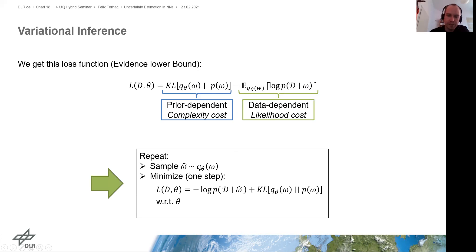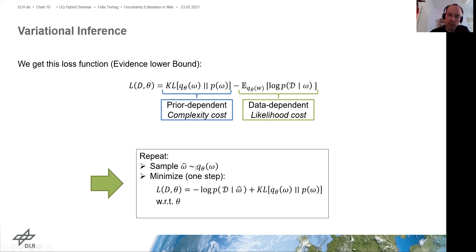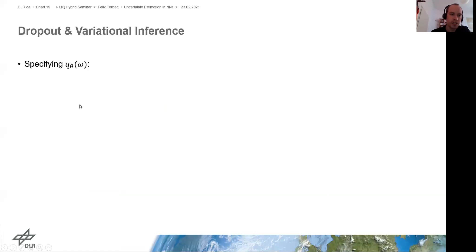Now we arrive at this simple algorithm: we sample from q — we just randomly initialize from this family of distributions — then we minimize this loss function one step with respect to θ, then we sample from the updated distribution q, and after some time we have the refined, proper q.